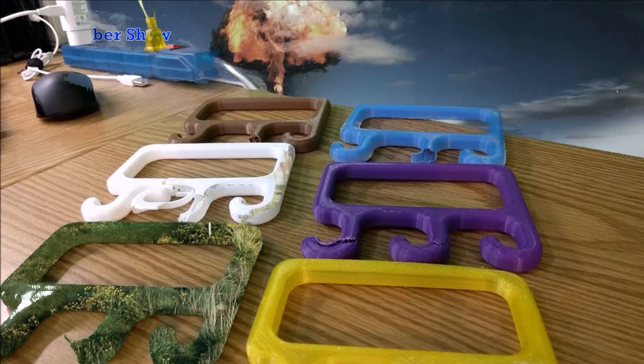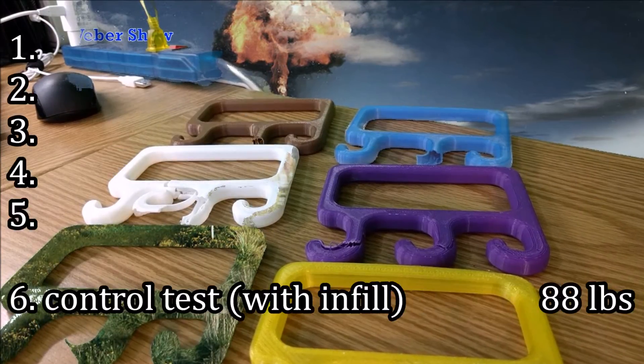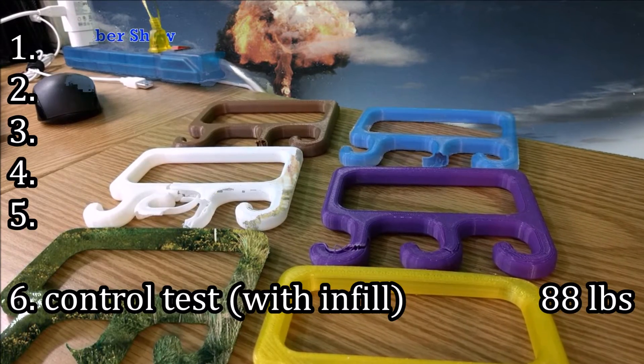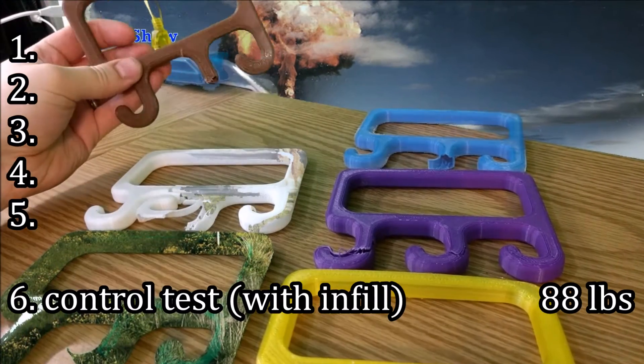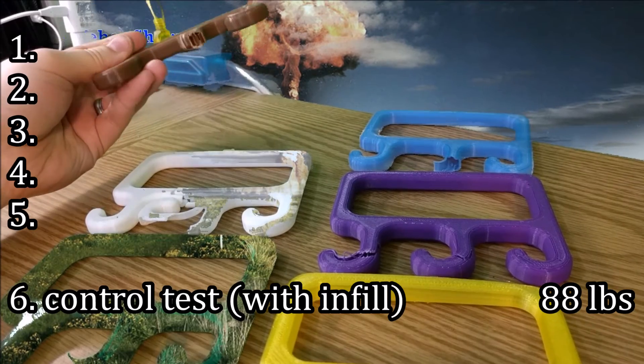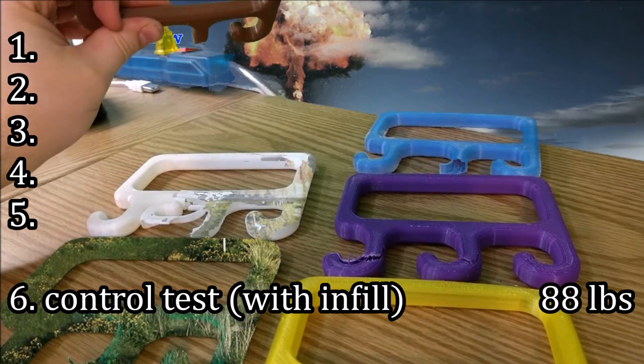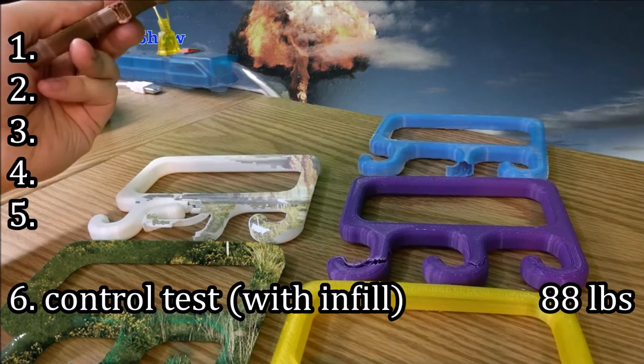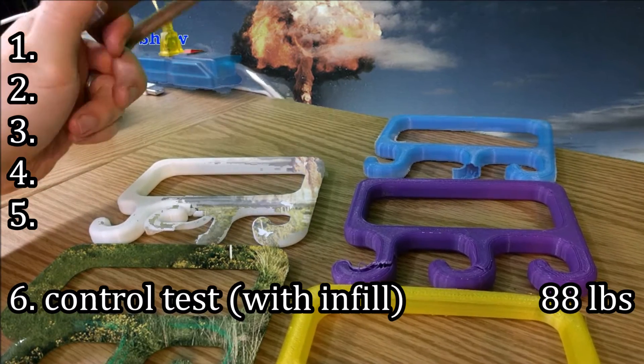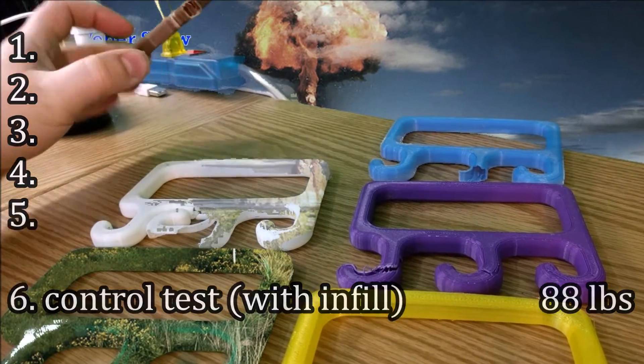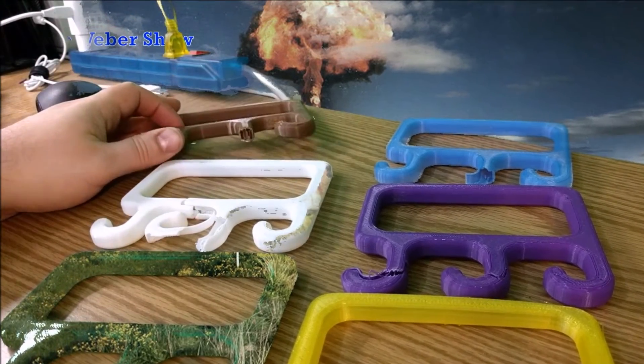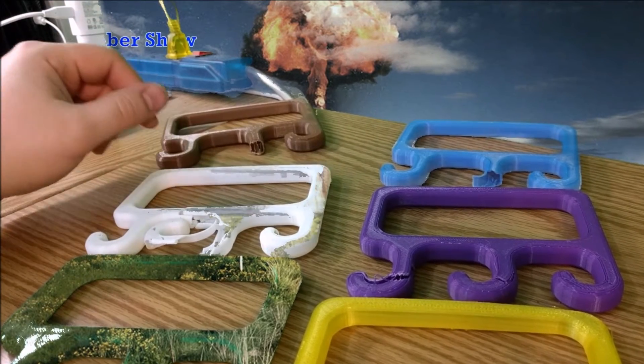So what did we learn here today? Well, we had some really interesting findings. The PLA Plus with infill, as expected, was the strongest. This thing held a whopping 88 pounds when all was said and done, and I calculated the weight of the cans and the waters and everything else.